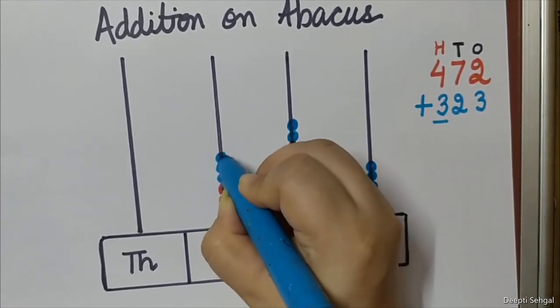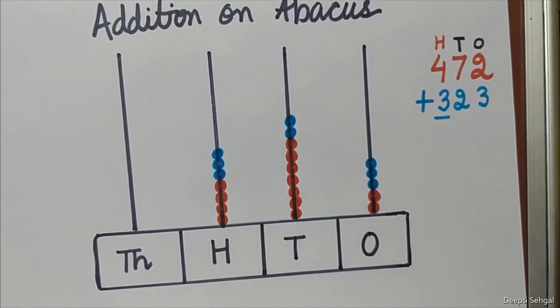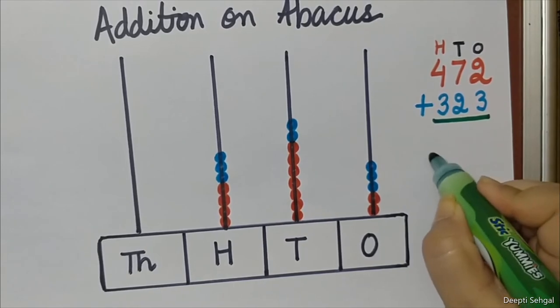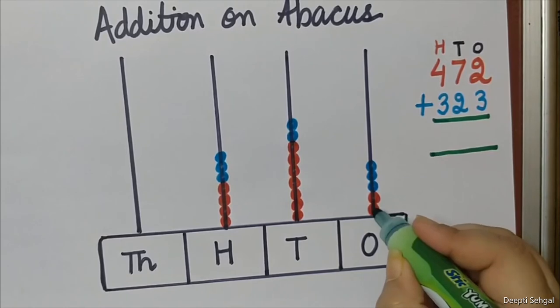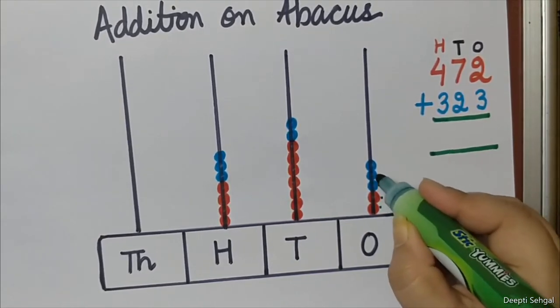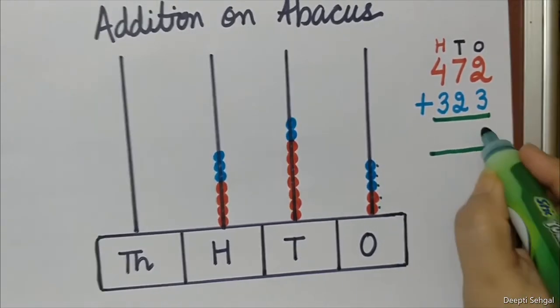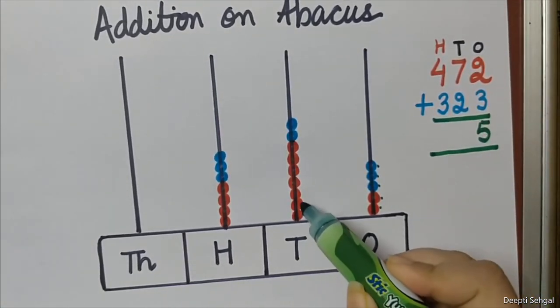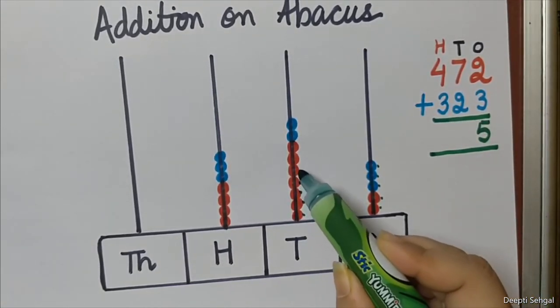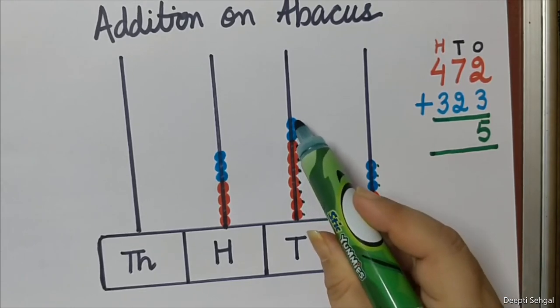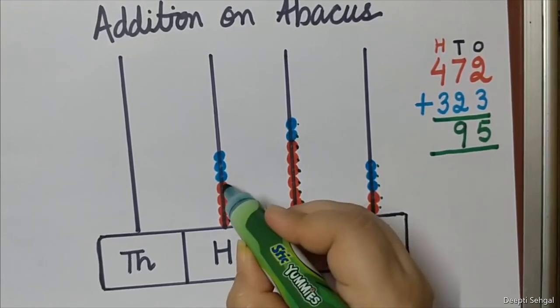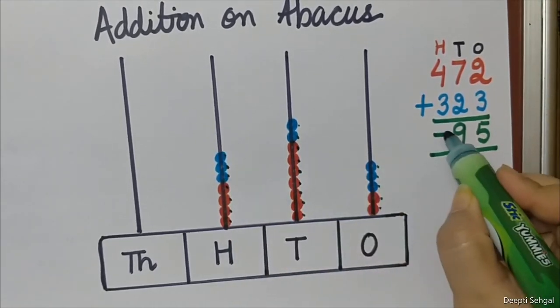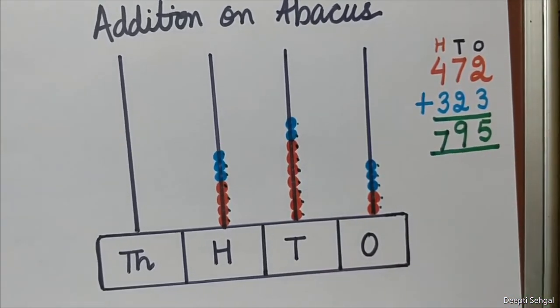Okay, now let us see what is the final answer when we add on abacus. So, how many ones are there? 1, 2, 3, 4, 5 - so five ones. 1, 2, 3, 4, 5, 6, 7, 8, 9 - nine tens. 1, 2, 3, 4, 5, 6, 7 - seven hundreds. So the answer is 795.